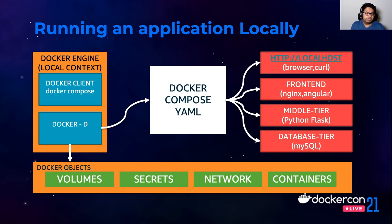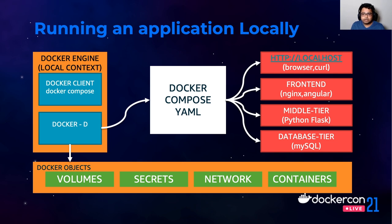It is the Docker daemon running in the Docker engine which is responsible for creating objects. For a typical application to run anywhere, it will need volumes, secret networks, and images at least. A container is a runnable instance of an image. Docker volumes are the preferred mechanism for persisting data generated by and used by Docker containers. Docker network is how one service will communicate with another — on a local machine it's usually DNS. Docker secrets is the mechanism to store secrets locally, mounted onto a specific location at runtime in the container.